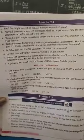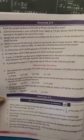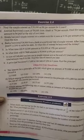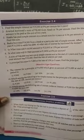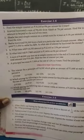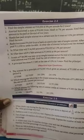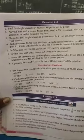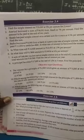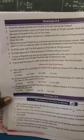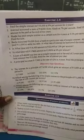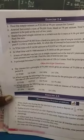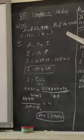Good morning. Today I am going to teach Exercise 2.4, Problem Number 5. The question is: in what time will rupees 16500 amount to rupees 22935 at 13% per annum? In this problem, the principal amount is 16500, the amount is 22935, and the rate is 13%. You have to find the value of n, which represents time.